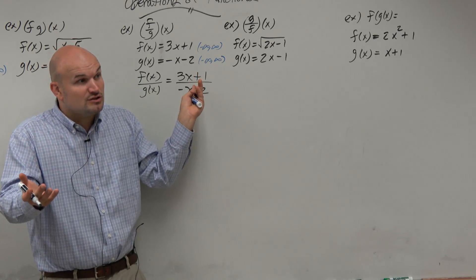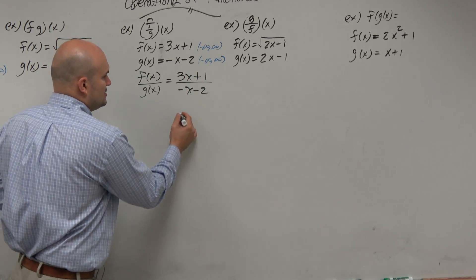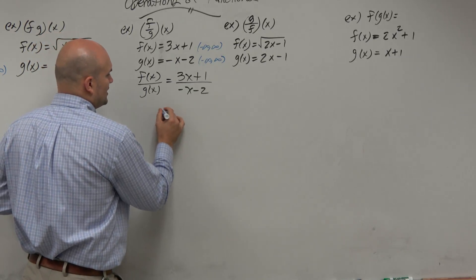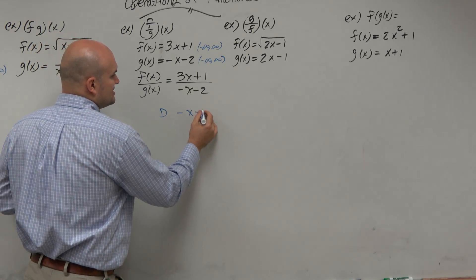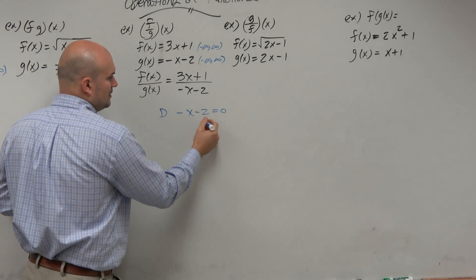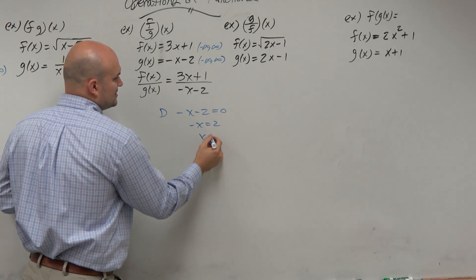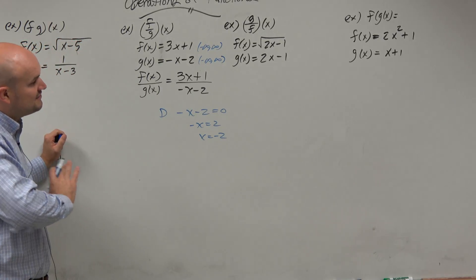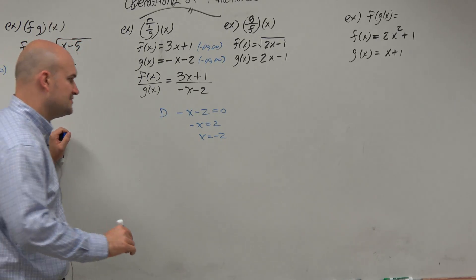So we have to restrict the domain based on that constraint. So we take our denominator, and we set it equal to 0. So we have negative x equals 2, x equals negative 2. Without showing my work. So therefore, domain is for all real numbers, except for negative 2.